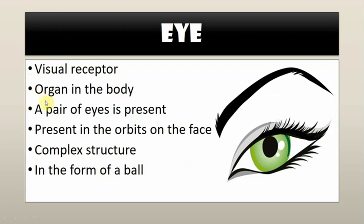In our body we have a pair of eyes, like other organisms also have a pair of eyes — not talking about insects which have compound eyes. The eyes are present in the orbit on the face; your facial bones have a small orbital area. The eye structure is very complex and is in the form of a ball. So these are the general characteristics of the eye.